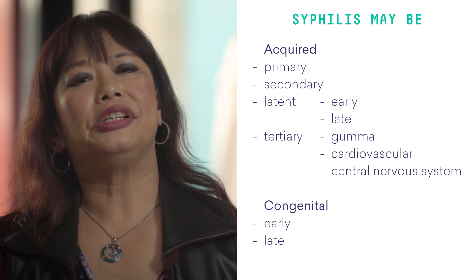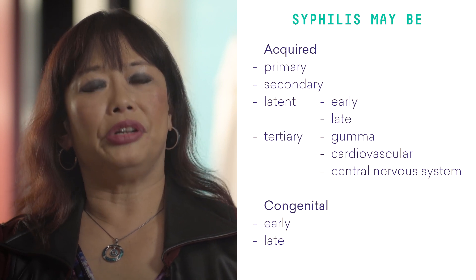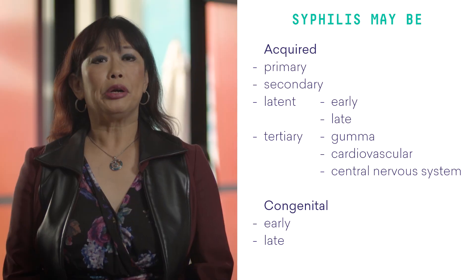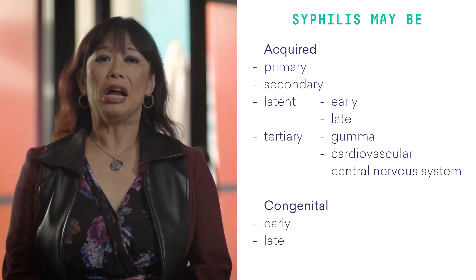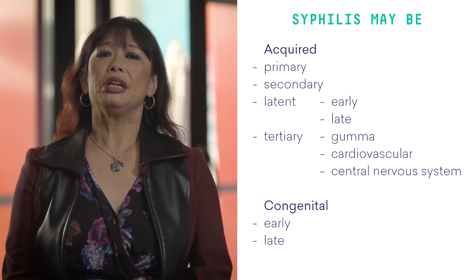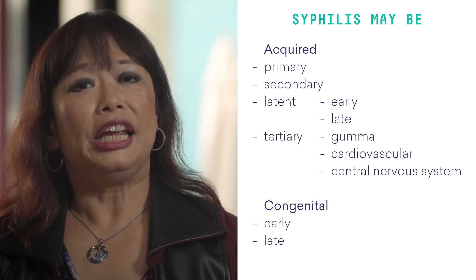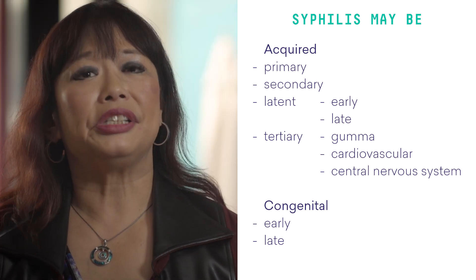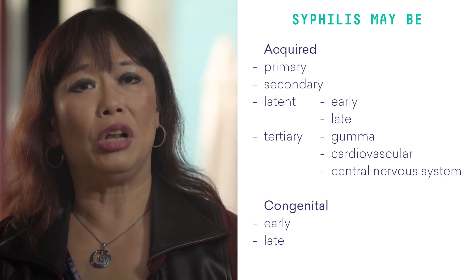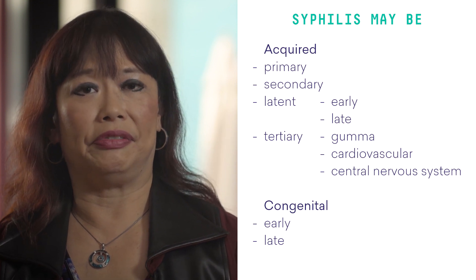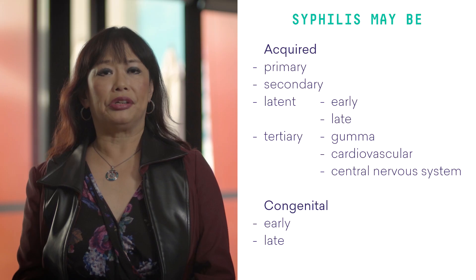Syphilis can be classified into acquired and congenital syphilis. Acquired syphilis can be primary, secondary, latent, or tertiary. Latent syphilis itself can be further divided into early or late latent syphilis. Then there is tertiary syphilis.